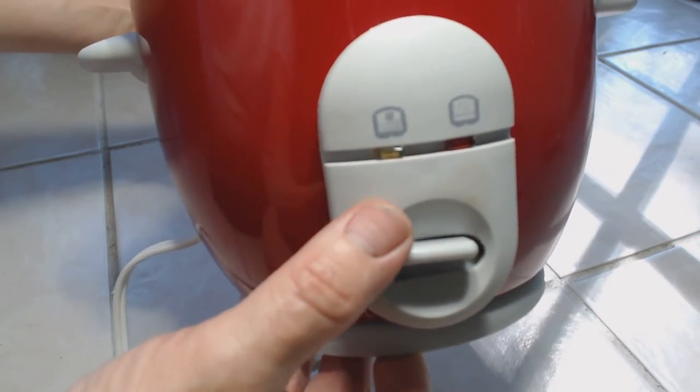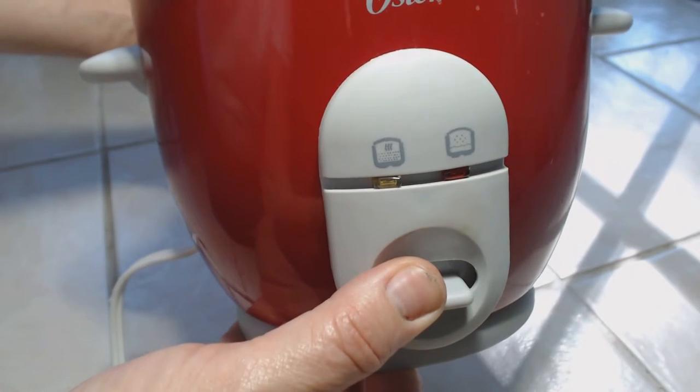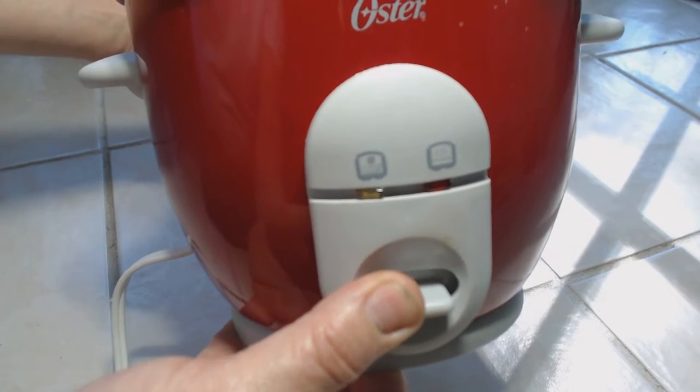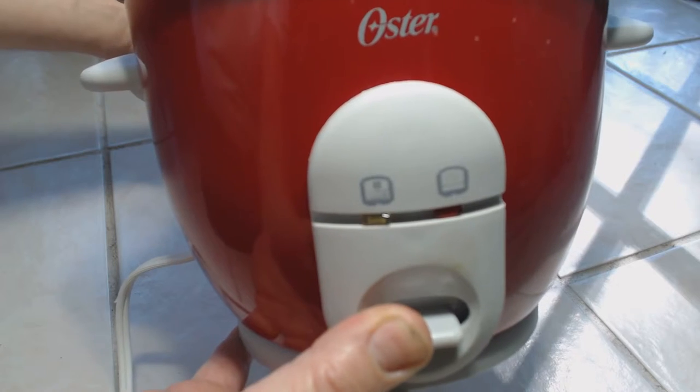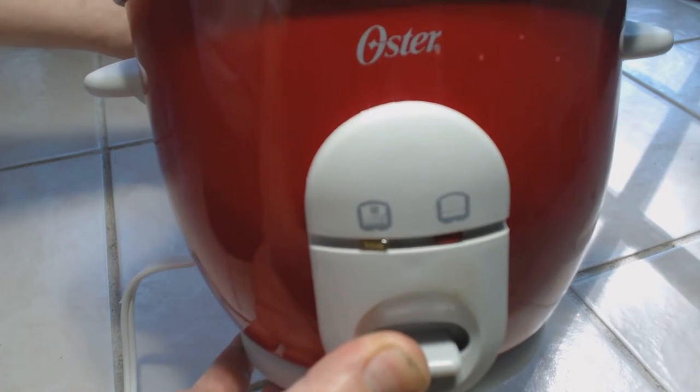The other thing that happens to them is this is a latching circuit. When you pull this in, it latches in, and that's the cooking action. If it doesn't latch in, the rice cooker won't cook.